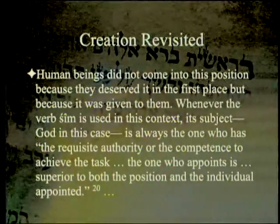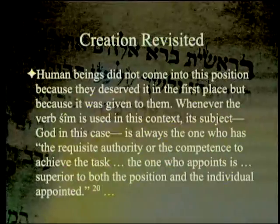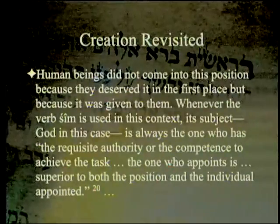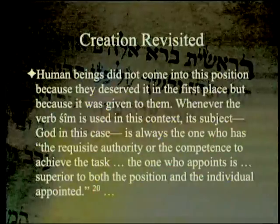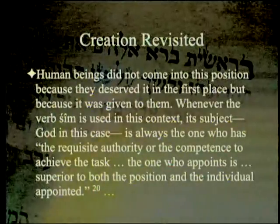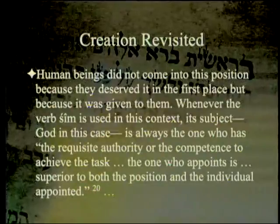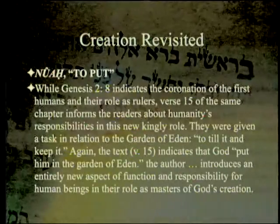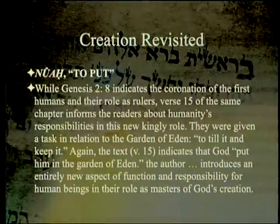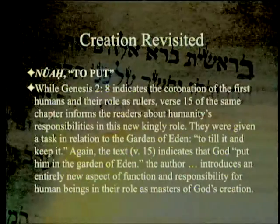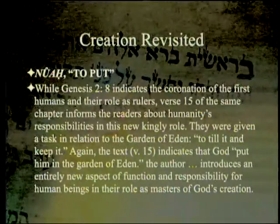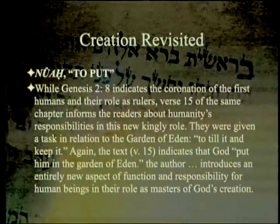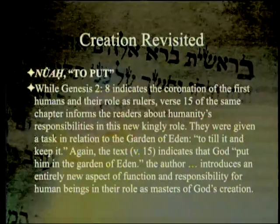Human beings did not come into this position because they deserved it, but because it was given to them. Whenever the verb 'sim' is used in this context, its subject — God — is always the one who has the requisite authority or competence to achieve the task. Turning to 'nuach' in verse 15: while Genesis 2:8 indicates the coronation of the first humans and their role as rulers, verse 15 of the same chapter informs the readers about humanity's responsibilities in this new kingly role. They were given a task in relation to the Garden of Eden — to till it and keep it.